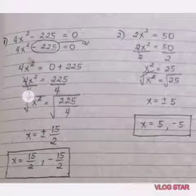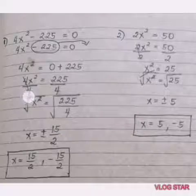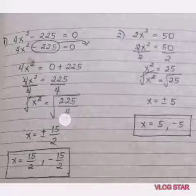Cancel out because 4 divided by 4 is 1, therefore we have x² is equal to 225 over 4.